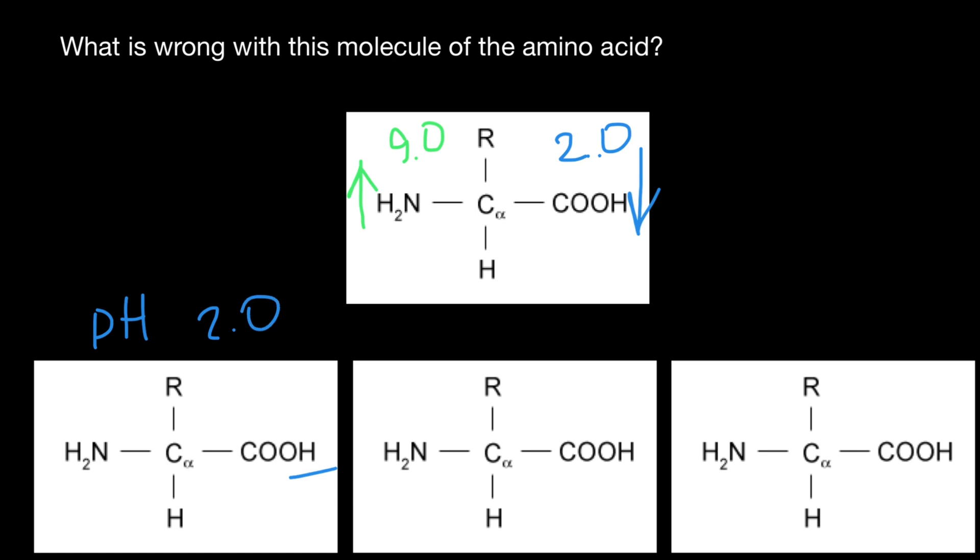And in the amino group, we are going to have three hydrogens. So it's going to be protonated. And we are going to have a positive charge here. So one positive charge.